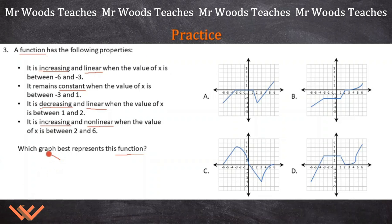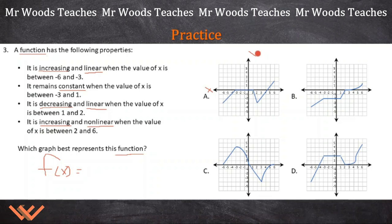So there's a lot of things here. You have to understand this language and what they're talking about between negative six and three, and two and six. The question is, which graph best represents this function? We have a function of x — I don't know what it is, but I know they're talking about x. So x is here — that's one thing you need to understand, along with y — so it will orient you to this coordinate grid. Negative six and negative three — there it is. Look at that: negative six and negative three, and it's increasing, meaning it's gaining value. It remains constant between negative three and one.